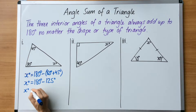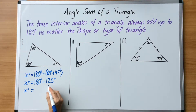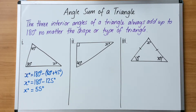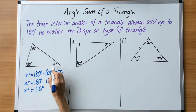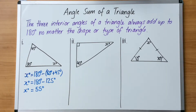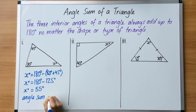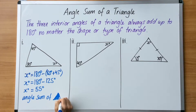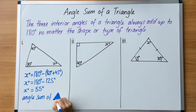Now we can solve the missing angle: 180 minus 125 equals 55 degrees. If we were to add 55, 80, and 45 all up together, we would get 180. We also need to write the type of angle we're dealing with here — this is an angle sum of a triangle. So that's our rule: angle sum of a triangle.